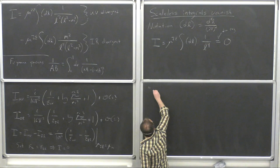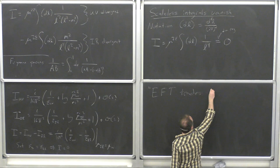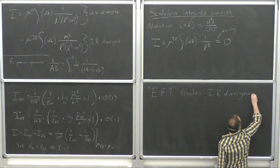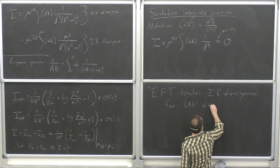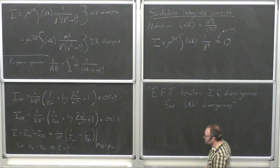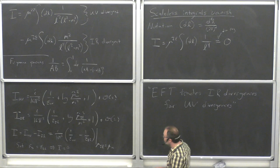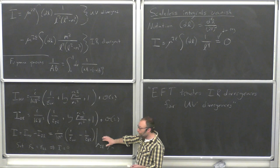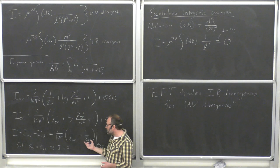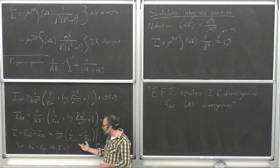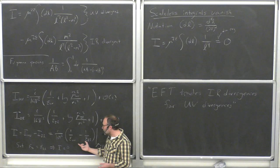Another slogan: EFT trades IR divergences for UV divergences. This is the first manifestation of that. Because we use dim-reg and always take scaleless integrals to vanish, we see that in order for scaleless integrals to vanish there has to be this mapping between the UV and the IR. Every time we use this trick, we're doing something that's relating UV and IR divergences to each other.